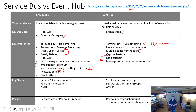Event Hub is different — it doesn't really support that concept. If you have an error processing an event, it's up to you what to do: you can either ignore it and keep going, or save it somewhere like a storage account. Event Hub out of the box doesn't support any dead letter concept or automatic reprocessing. You can reread the stream from a point in time, but you're going to reread all of the messages, not just the ones that failed.